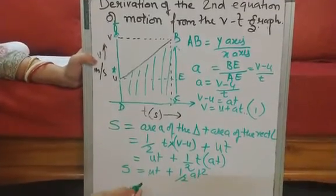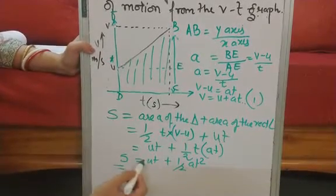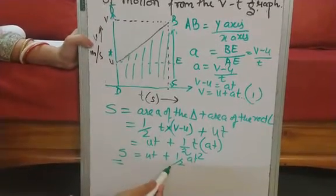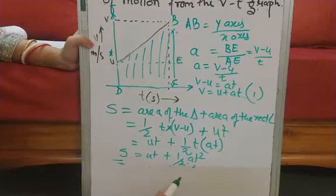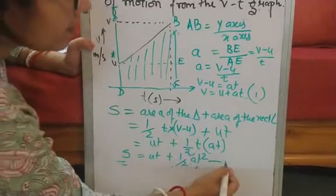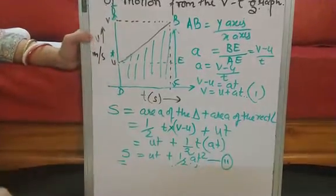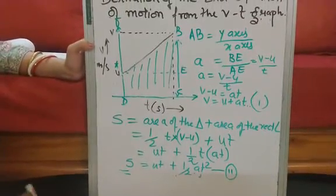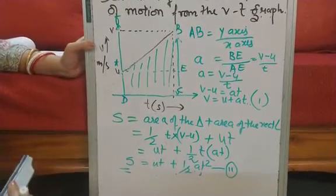So it is ut plus half at square. So here S is equal to or rather displacement is equal to ut plus half at square. See, we have now derived the second equation of motion. I hope you have understood.